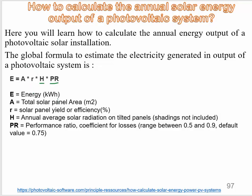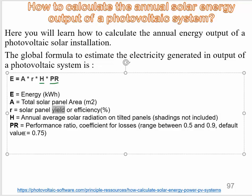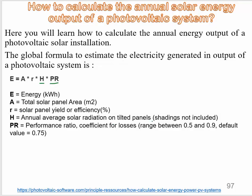E is the energy, measured in kilowatt-hour. A is the total solar panel area, measured in square meters. R is the solar panel yield or efficiency. H is the annual average solar radiation on tilted panels, shading not included — we suppose the panels are in direct sunlight. PR is the performance ratio coefficient for losses.